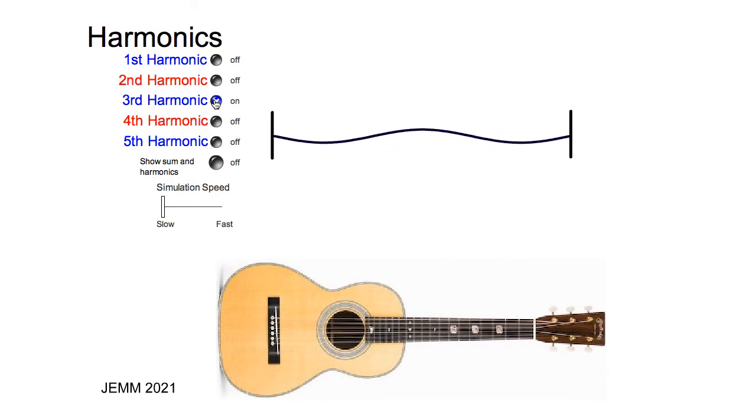This is another pattern of string vibration that forms in a guitar string, or in any string instrument. This is called the third harmonic. And this time there are four points that aren't moving. Four points that are nodes. There's one point, two points, the third point, and the fourth point. Those points are called nodes.